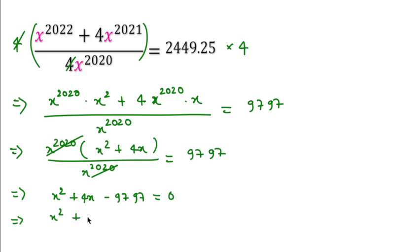If we solve this, then x^2 plus we can write 4x as 101x minus 97x, so that we will get 4x, and here minus 9797, which is equal to 0.